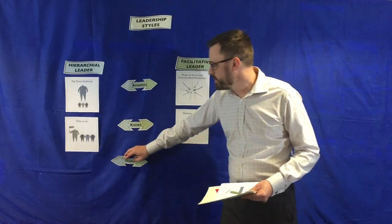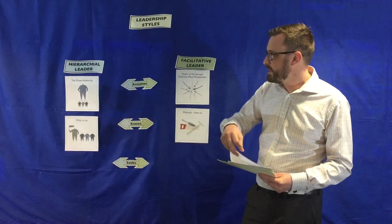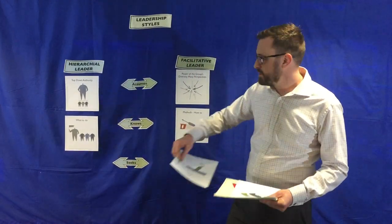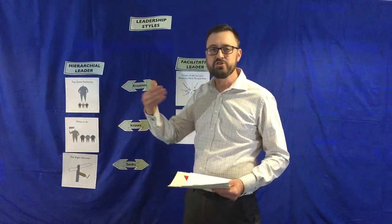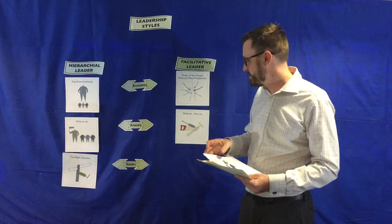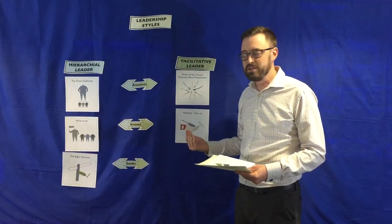There's a difference in what the two models of leadership are actually seeking. In the traditional hierarchical model, the leader is seeking the right answer, the right decision. We're pointing in the right direction. That's their job. There's a best answer, and their job is to come up with the best answer as well as they can.